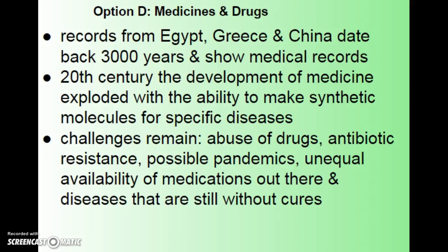Welcome to the screencast for topic 15.1, also known as Option D, on medicines and drugs. This topic has a ton of information, so in my screencast and notes I'm going to point out the highlights and the favorite questions that IB has on this. You'll also get a practice quiz with pretty much every question I can find, and you'll see they have very common themes for each subject, whether it's an antiviral, analgesic, or stimulant.